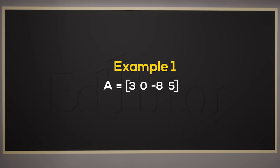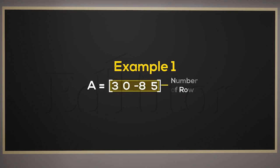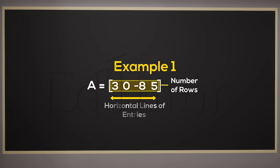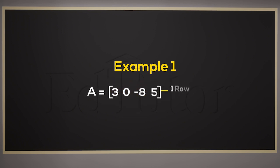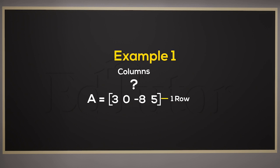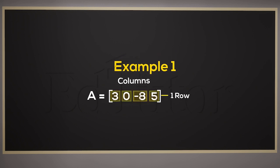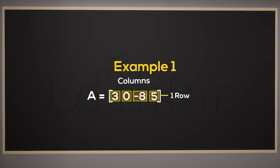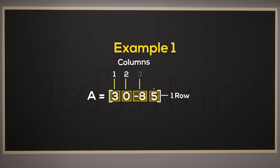Now, with every matrix, there come two things: the number of rows and the number of columns it has. Rows are horizontal lines of entries in a table. Since there's just one horizontal line, there's only one row in this matrix. Columns are vertical lines of entries in a table. In our case, A has four columns.